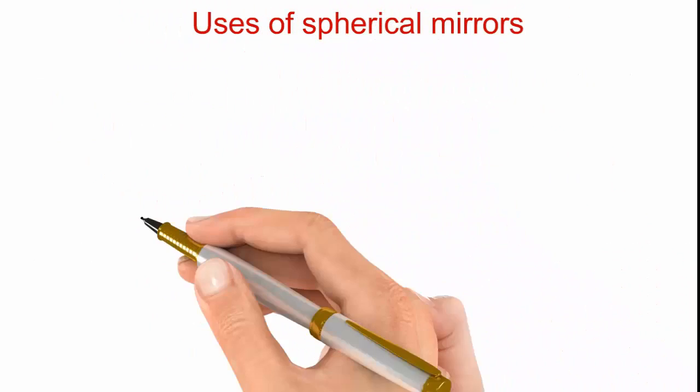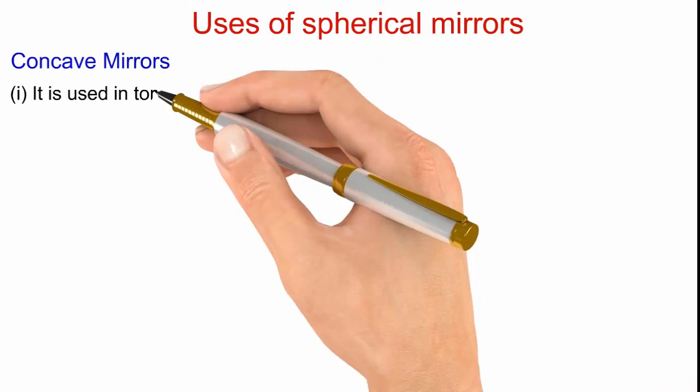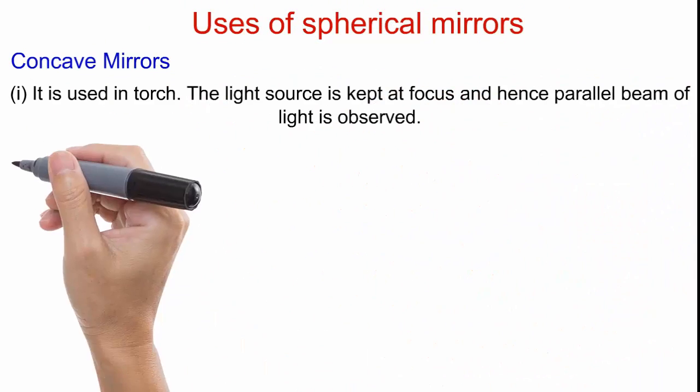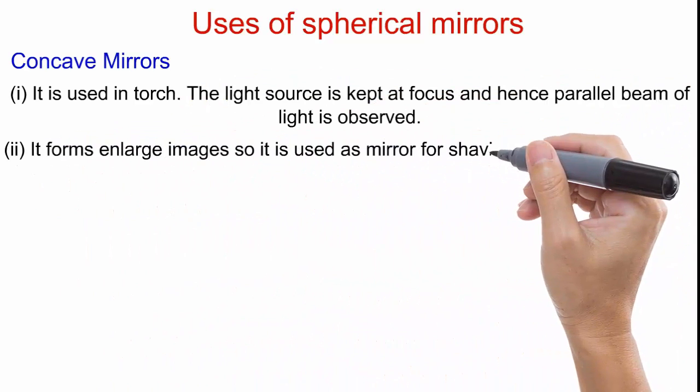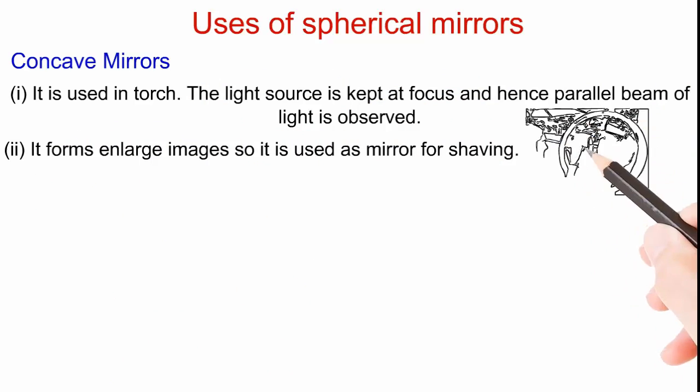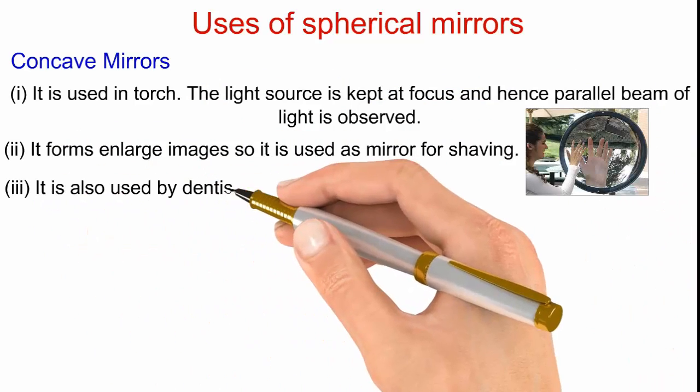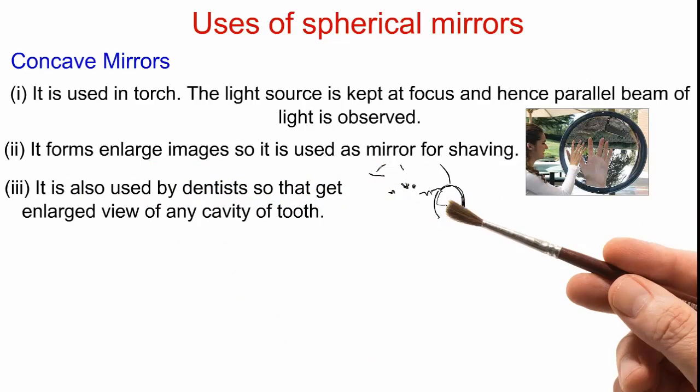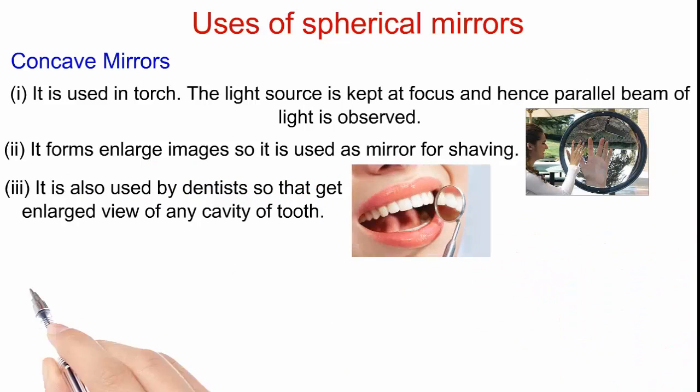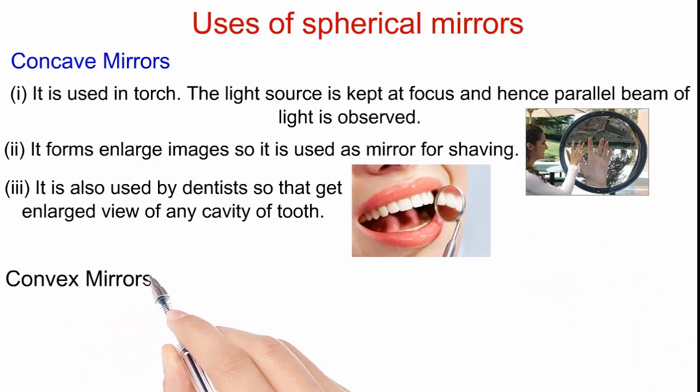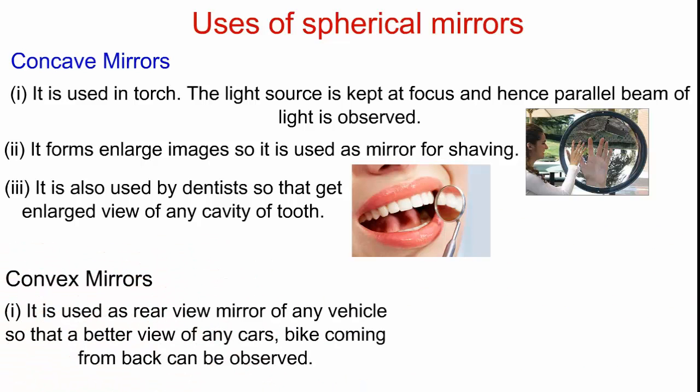Coming to some of the use of spherical mirrors in our day-to-day life. Concave mirror uses: it is used in torch. The light source is kept at focus and hence parallel beam of light is observed. Second, it forms enlarged images so it is used as mirror for shaving purpose. It is also used by dentists so that they can get enlarged view of any cavity of tooth.